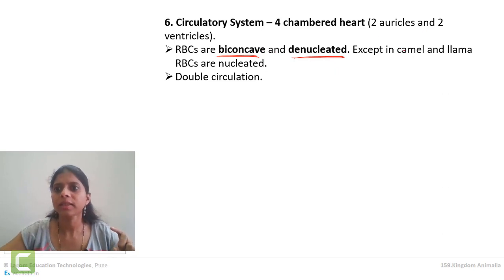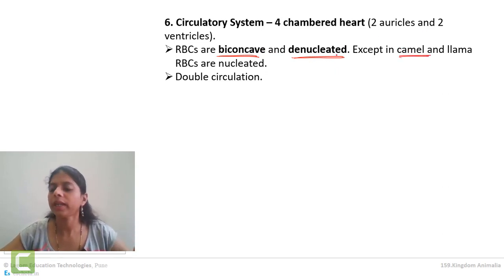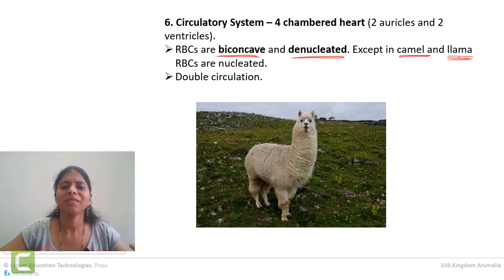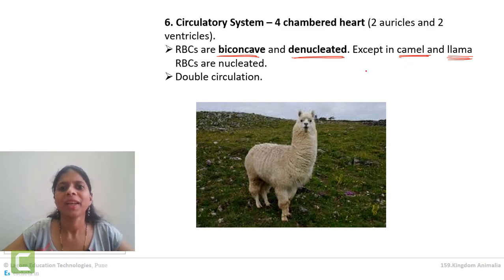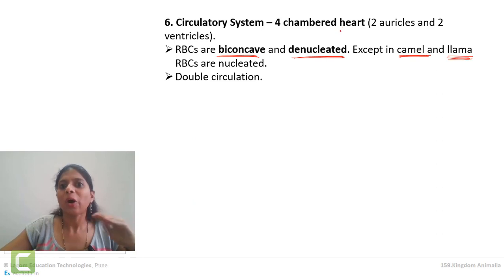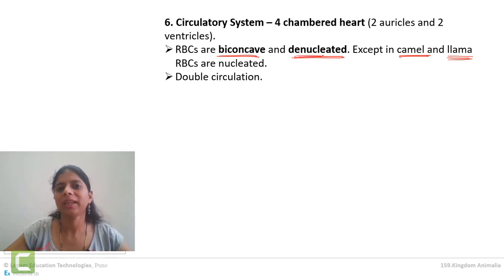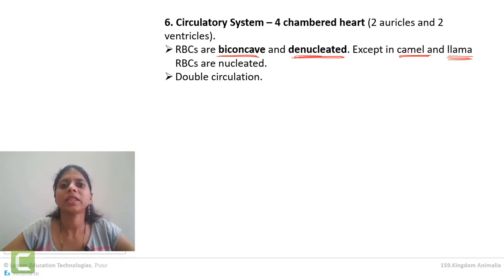There are two exceptions to the denucleated RBCs rule: camel and llama. In camels as well as in llamas, RBCs are nucleated. All other mammals like dogs and human beings have denucleated RBCs. Exceptions are only these two — camel and llama. Double circulation is also observed in mammals.